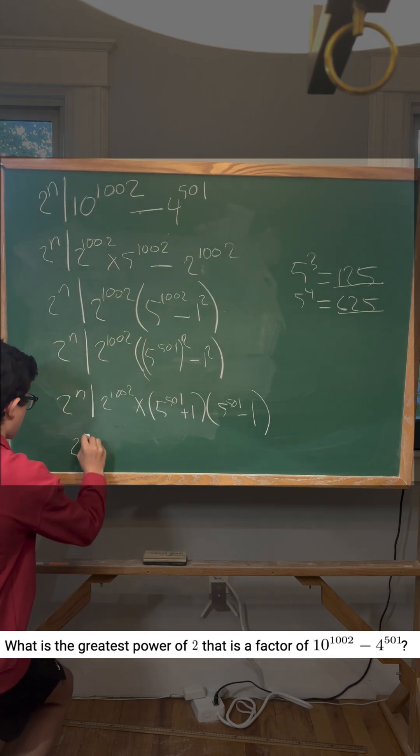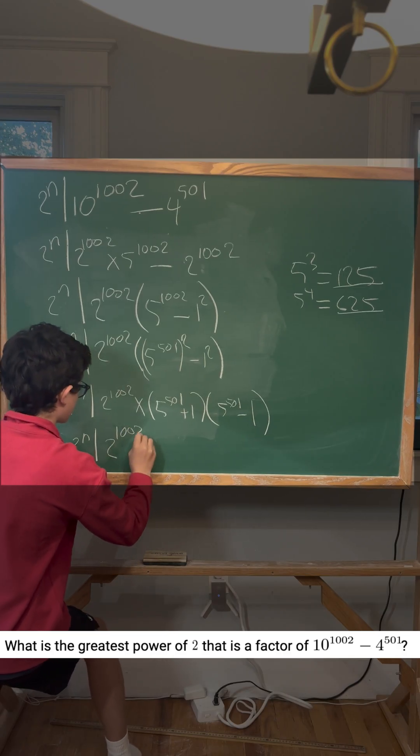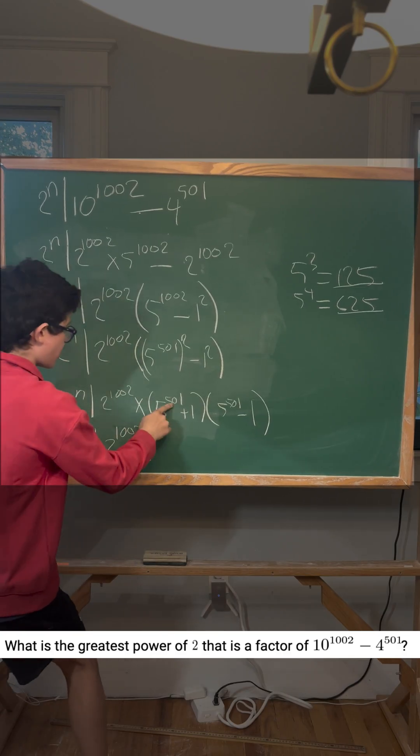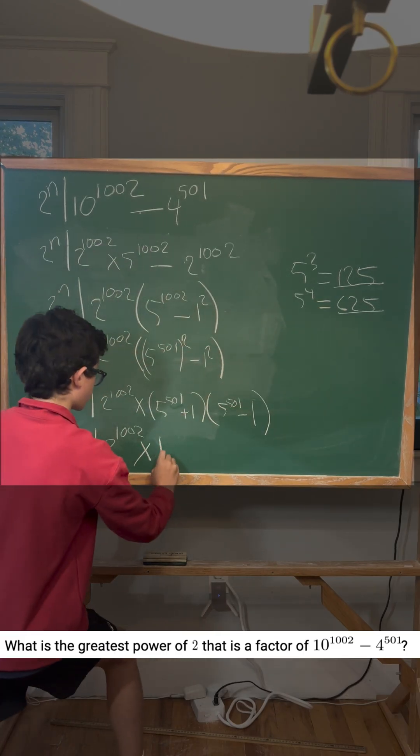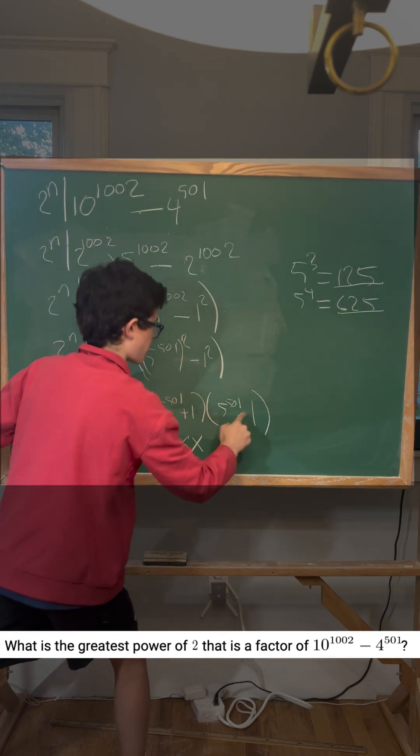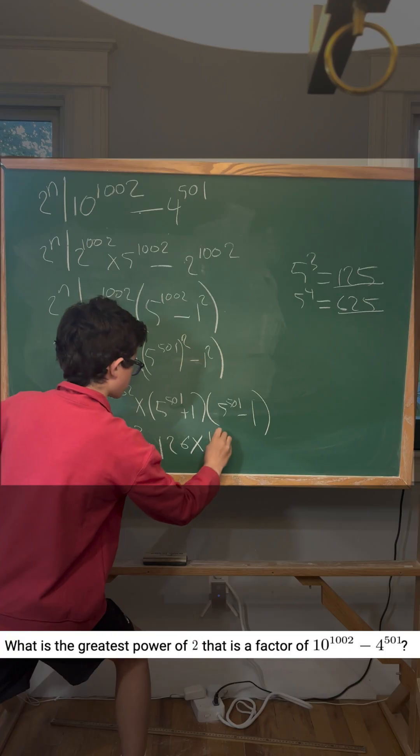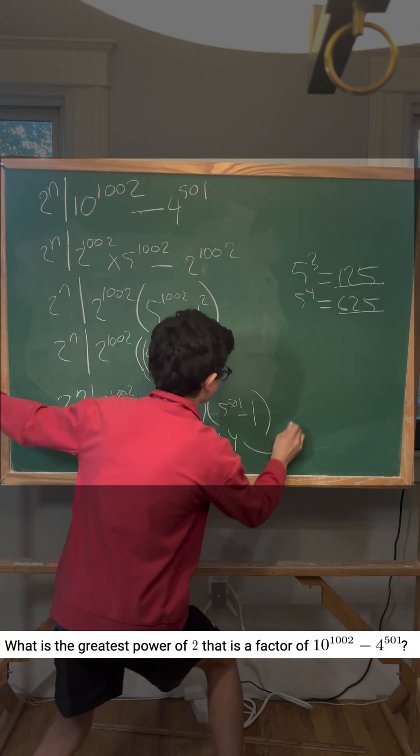So it'll be 2^n divides 2^1002 times, so this is odd, so it'll be 125 plus 1, which is 126, times, this is also 125, but it's minus 1, so 124.